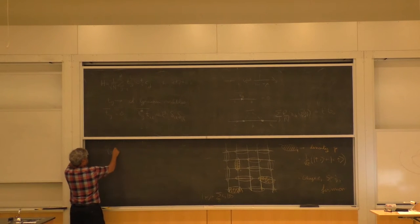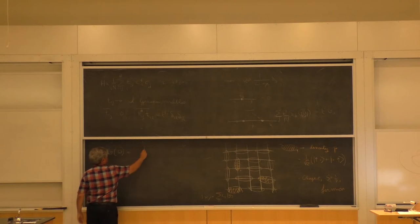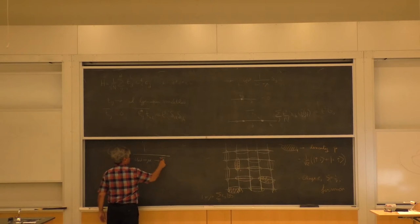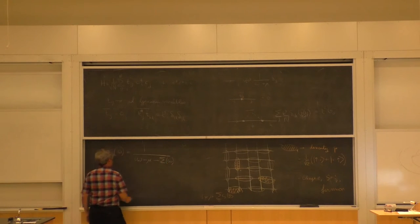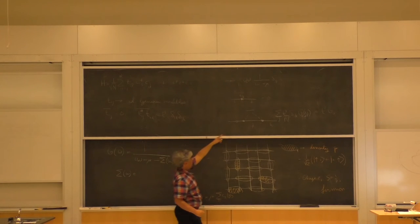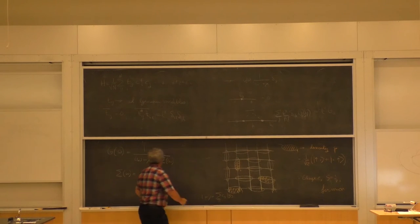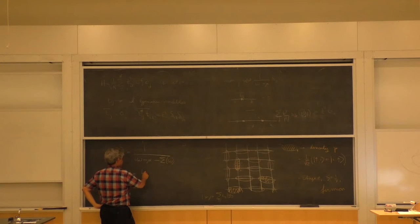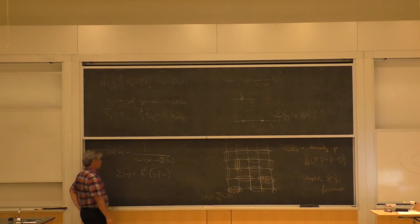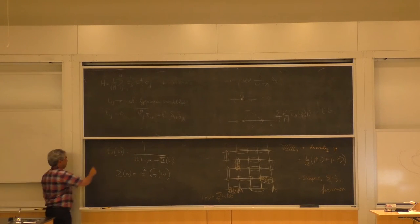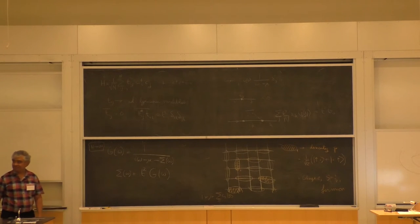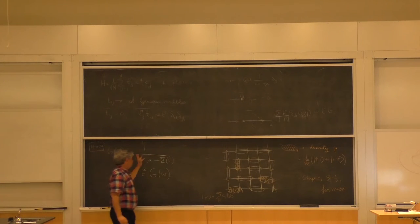Your G of omega becomes independent of site. G equals 1 over (i omega minus mu minus sigma of omega), and sigma of omega — you can just see from this graph — this just becomes the full Green's function. So sigma of omega is T squared G of omega. As N goes to infinity, that's the basic Green's function. The self-energy is just the Green's function.